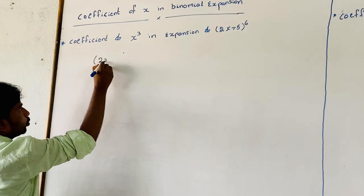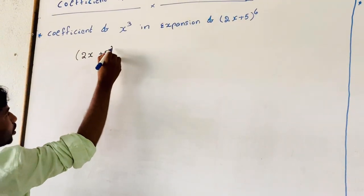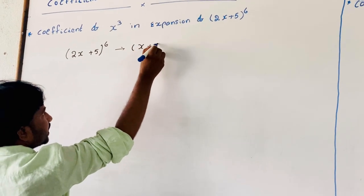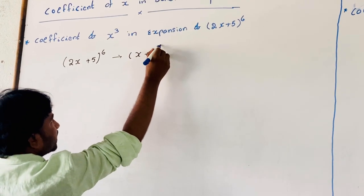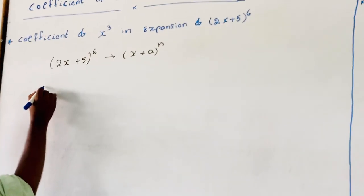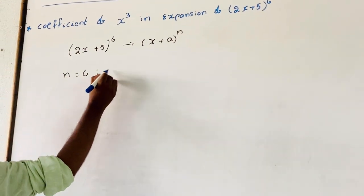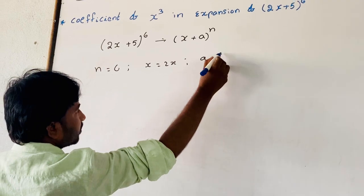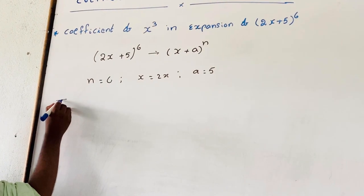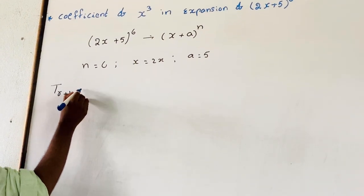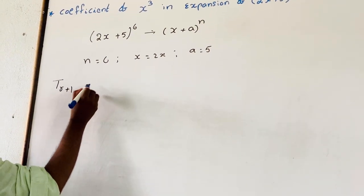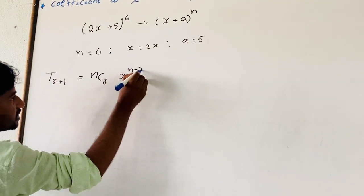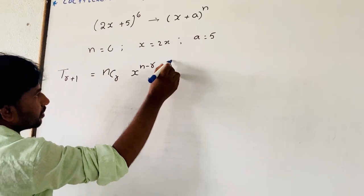Now, (2x + 5)⁶ by comparing with (x + a)ⁿ, here n is equal to 6, x is equal to 2x, and a is equal to 5. We know that the general term T(r+1) is equal to nCr times x^(n-r) times a^r.